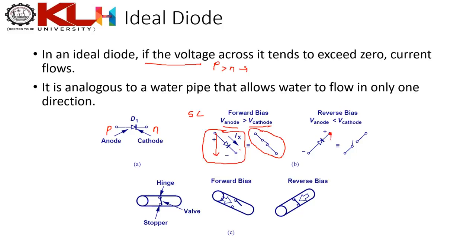When the cathode is at higher potential than the anode, the diode is reverse biased (p < n). In reverse bias there is no current flow, and we model the diode as an open circuit. So in an ideal diode: forward bias → short circuit; reverse bias → open circuit.